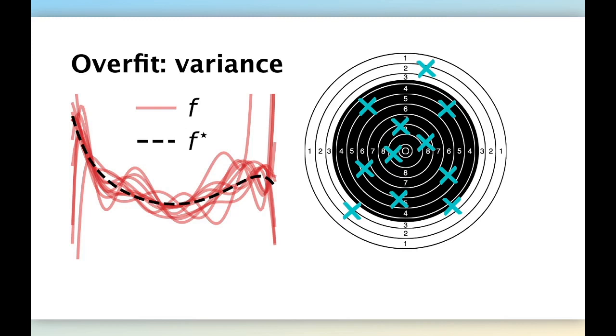So this problem is what we call the variance of the estimated model, which is basically a large dependency on small variation of the training set.